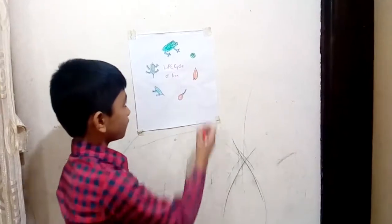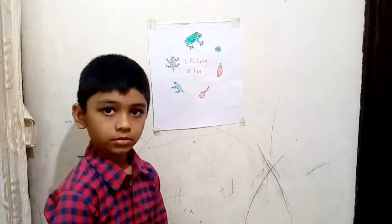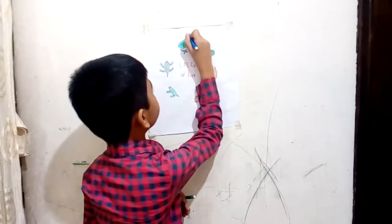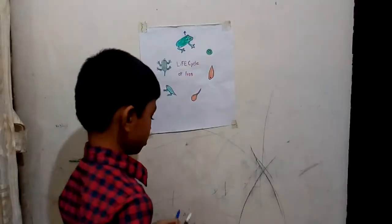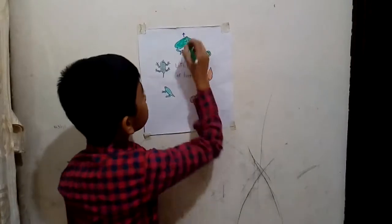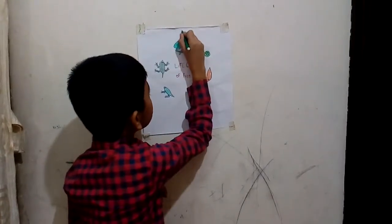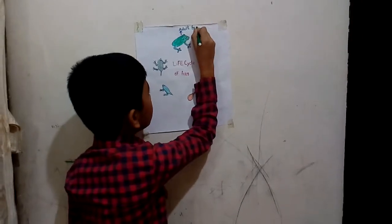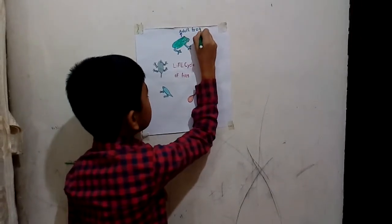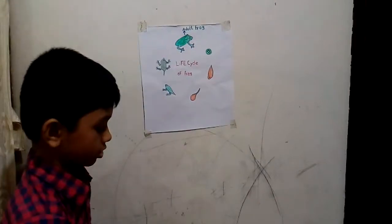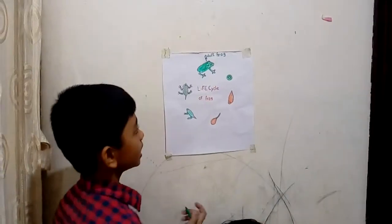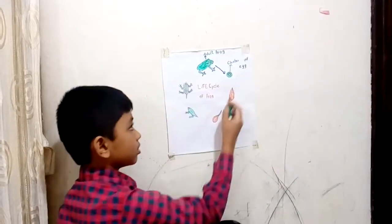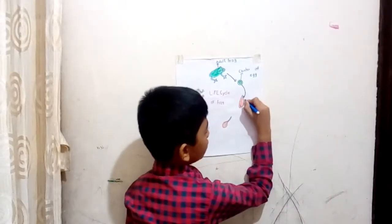Life cycle of frog. So first, this is adult frog. A frog lays cluster of egg.